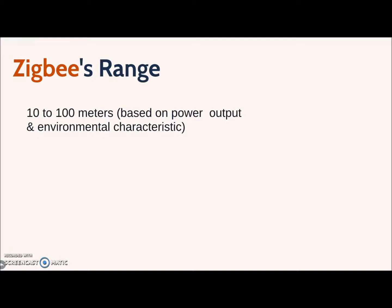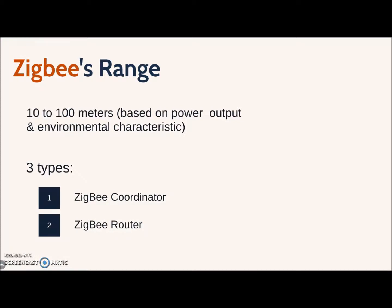Zigbee basically has three types of devices configuring the network: a Zigbee coordinator, a Zigbee router, and Zigbee end devices.